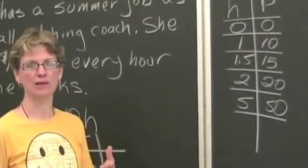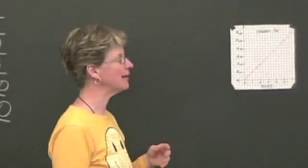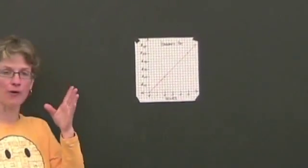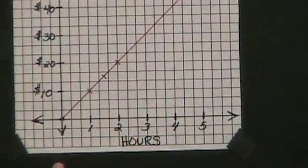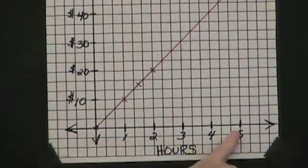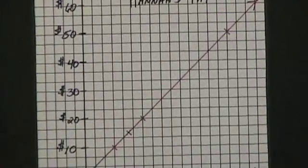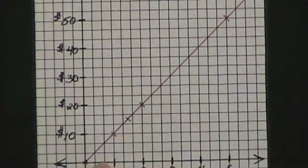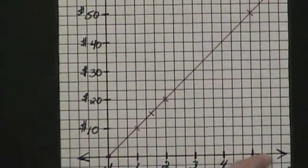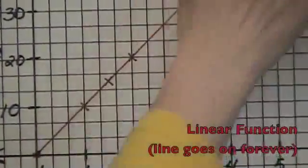Let's take a look at what this looks like visually. Because you're going to be asked to look at graphs a little bit later on and tell whether or not they are functions. The independent variable always goes on the x-axis. The dependent variable goes on the y-axis. Now, all I've done here is taken these values and plotted them. So as the hours increase, the pay increases. And this is actually what we call a linear function. So you can see that the line goes on forever.